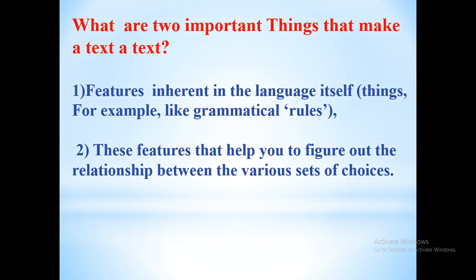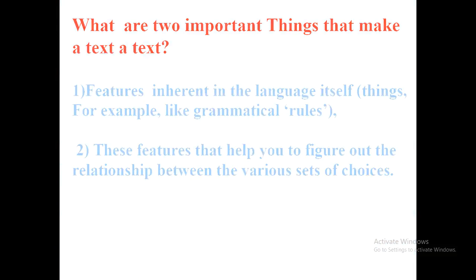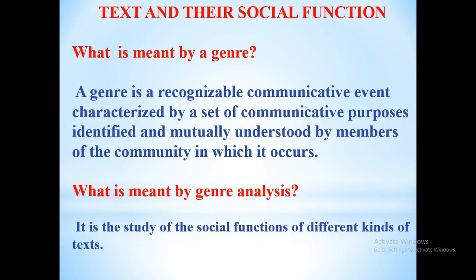What are the important things that make a text a text? The first one: features inherent in the language itself — for example, grammatical rules, the structure or organization of the text, and language characteristics. The second: features that help you figure out the relationship between the various sets of choices, so you can identify the goals or purposes of the text — whether it will be a narrative text to retell a story or entertain readers, or a report text to describe something scientifically.